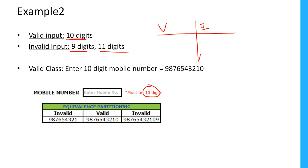Only 10 digits are valid, but 9 digits are not valid, 11 digits are not valid. We can categorize them into valid and invalid.